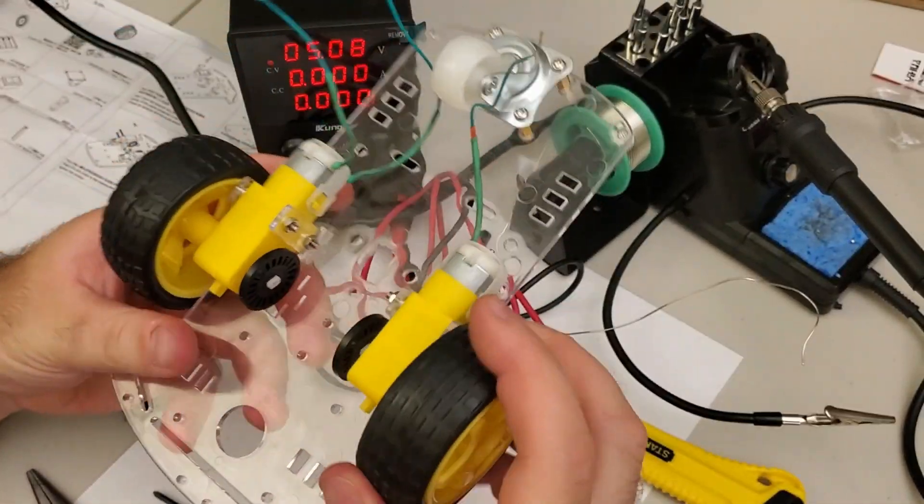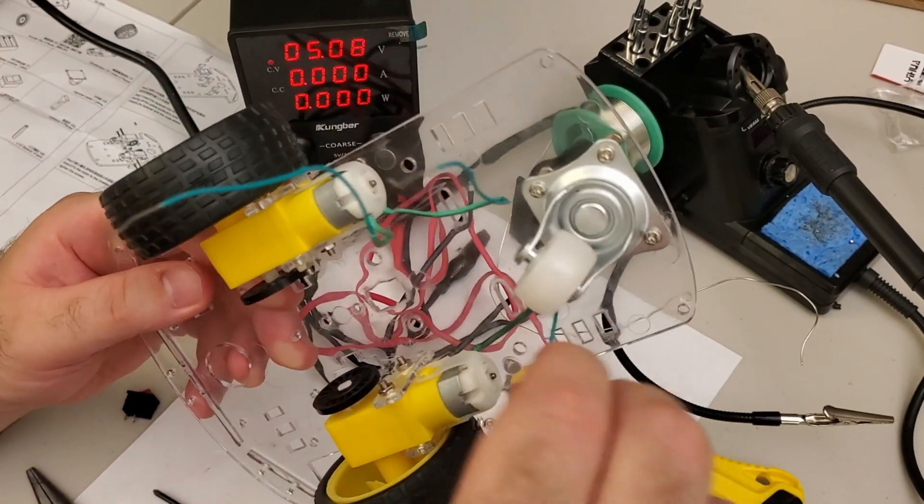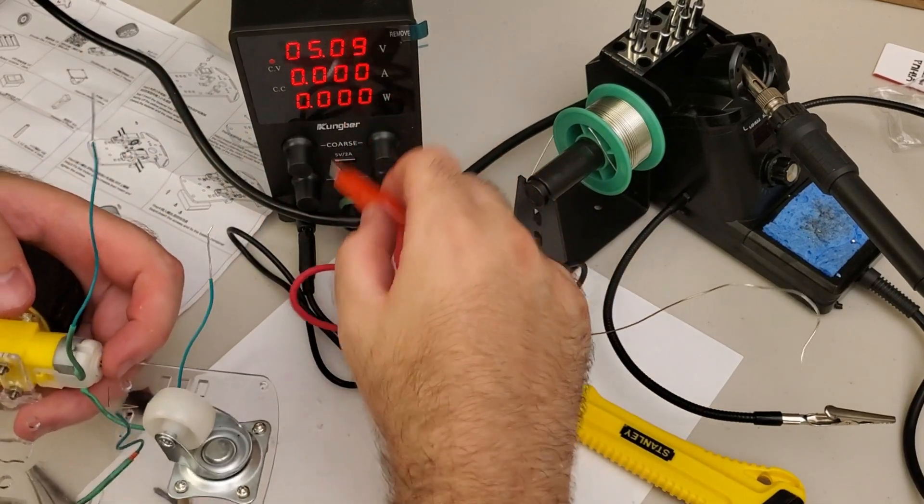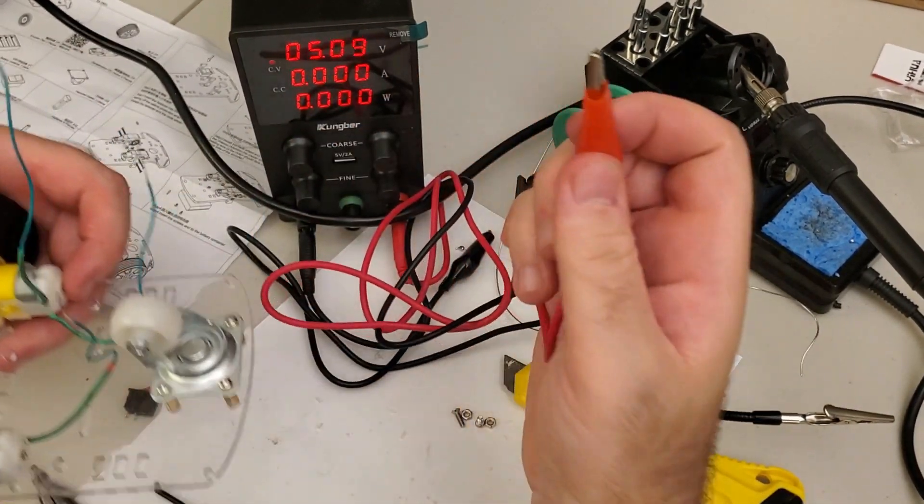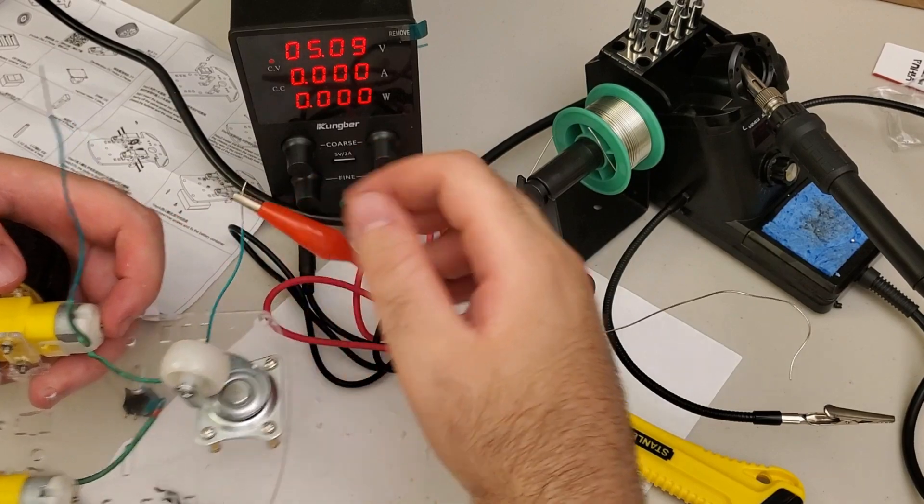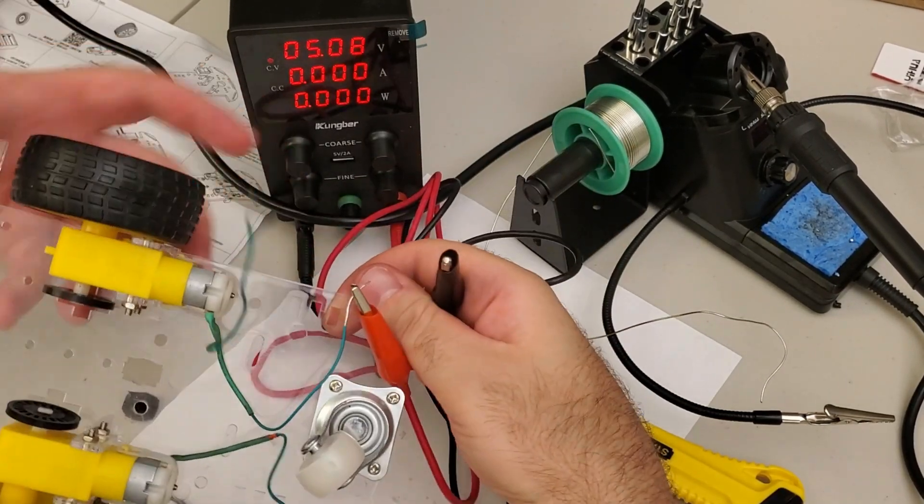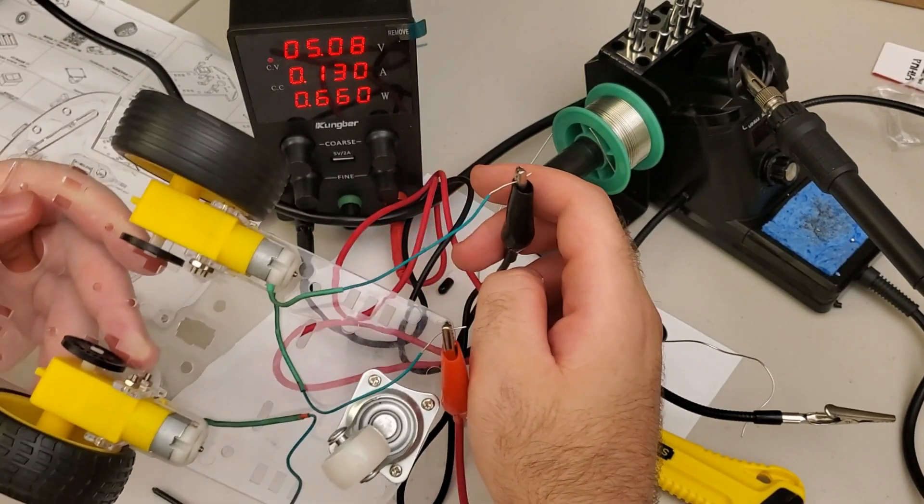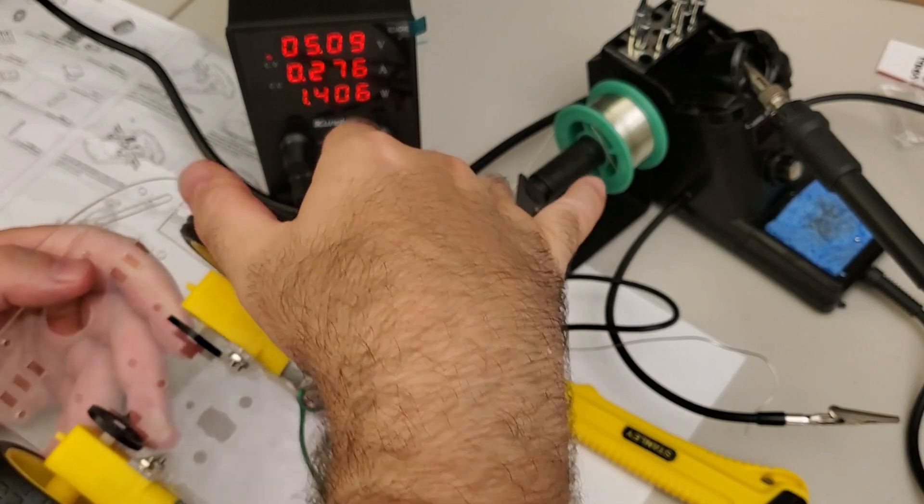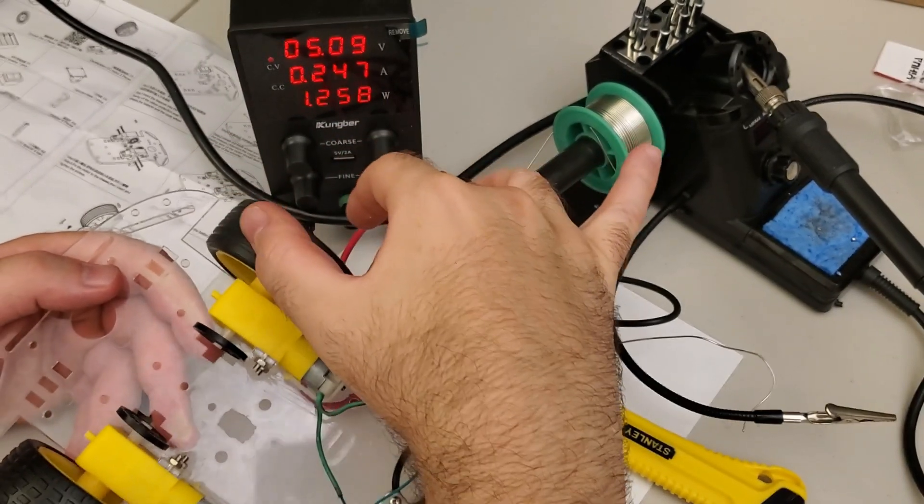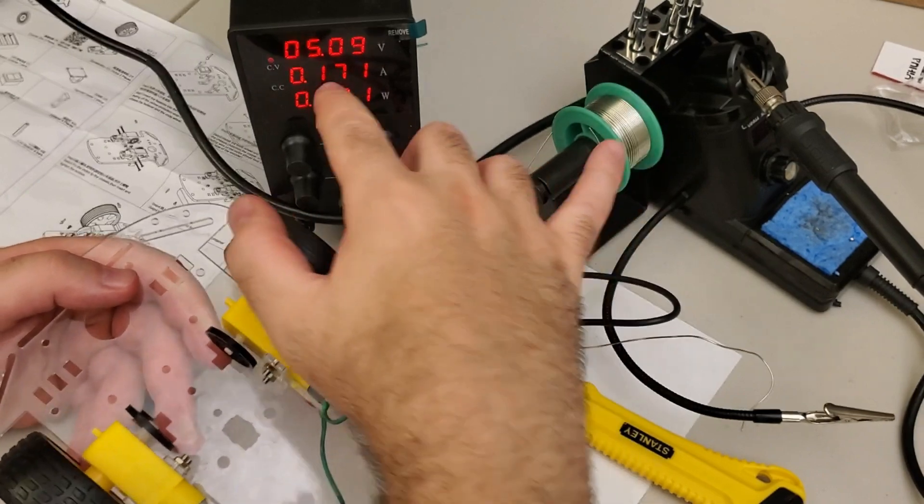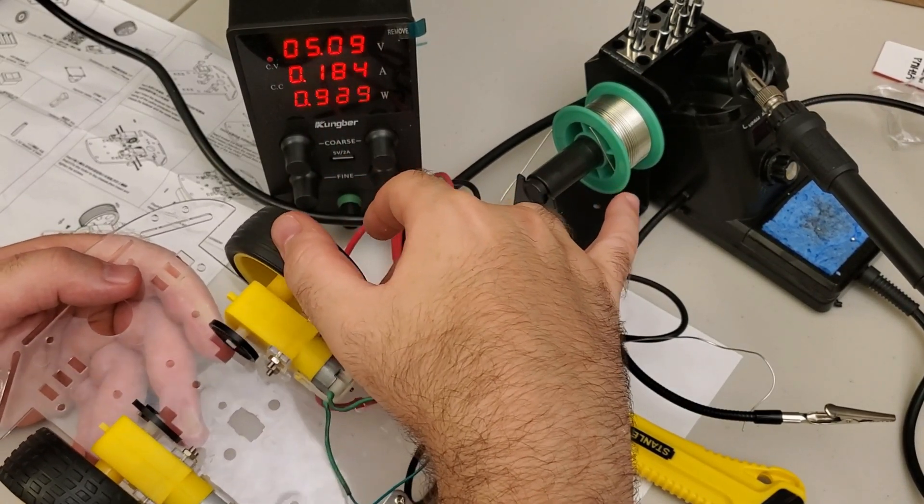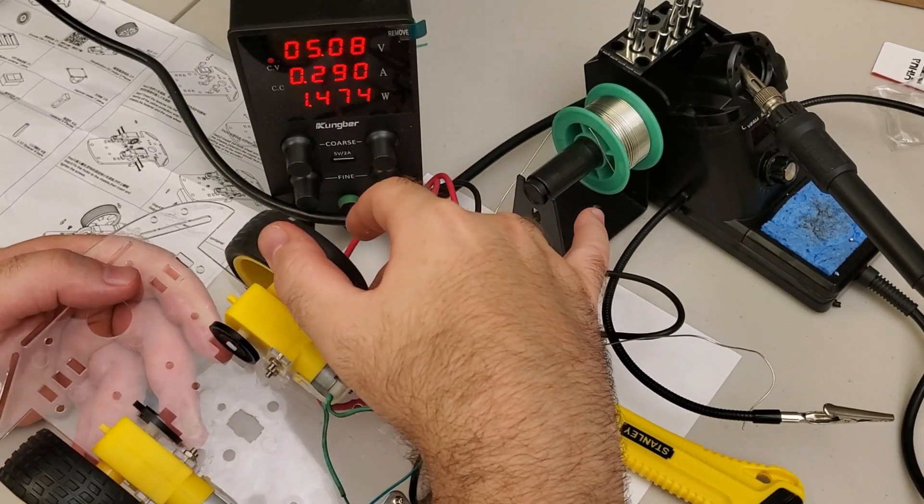Once you attach the wheels, it's a very good idea to test if everything is working perfectly. For that purpose you can use a power supply. Over here I'm applying five volts and I will test the motors. Okay, let's see what happens. Perfect. You can see that the motor is spinning, and you can see the current draw over here. If you have a resistance you can see that the current can go up to, for example, even 0.4 amps, and you can see the power. The power is around one or two watts.